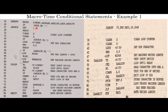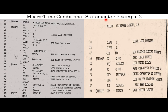Now we look at another example — the same macro but with a different invocation where the value of UR is null. Since ampersand UR is not equal to null is false, the macro time variable URCK will not be set. 'Clear x' and 'clear a' will be copied. If ampersand URCK equals 1 is false, so statements 40 and 42 will not be there in the expanded program.